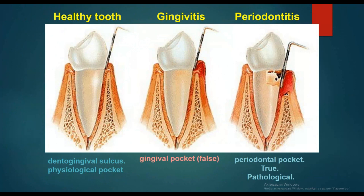In this picture we see a healthy tooth and dento-gingival sulcus (physiological pocket), gingivitis with a gingival pocket forming, and periodontitis with a true pathological periodontal pocket.